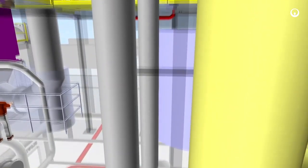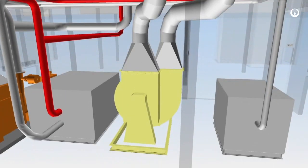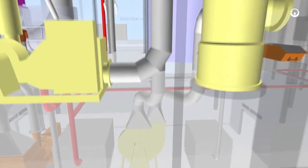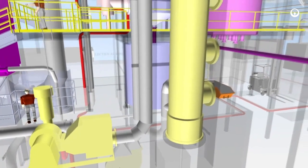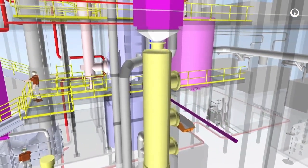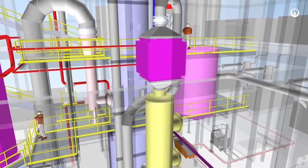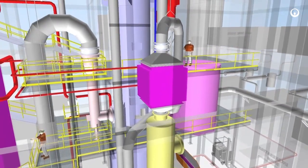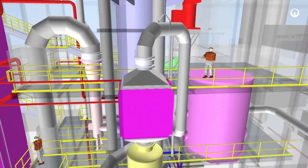Flue gas from the wet ESP travels to the demister for additional moisture removal. It then travels to the coil heat exchanger, where the circulating thermal oil tube side raises the temperature of the flue gas shell side an additional 250 degrees Fahrenheit to reheat the flue gas upstream of the mercury removal system.